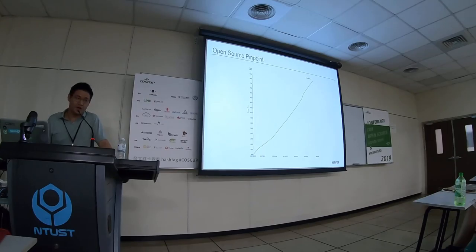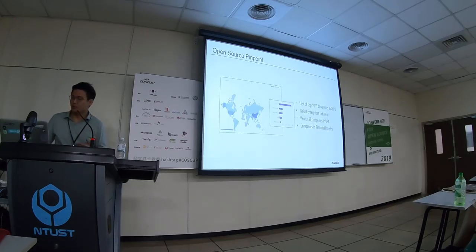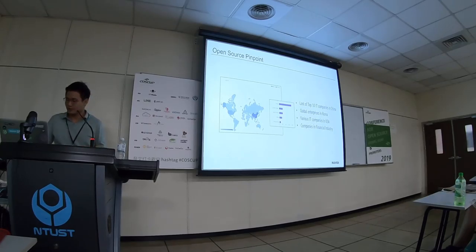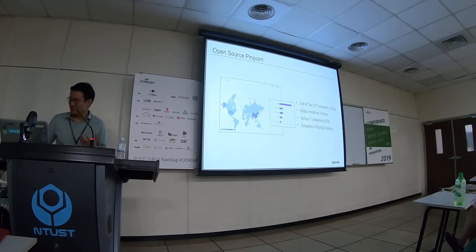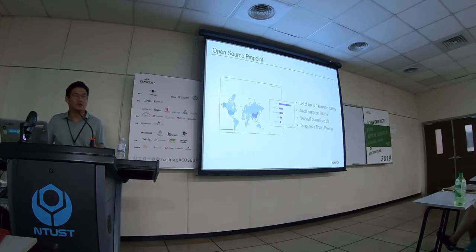This is the graph of GitHub stars — you can see it's continuously increasing and the community is growing really fast. This is a global map showing regions that are using Pinpoint. As you can see, it's used in almost everywhere in the world. Due to legal issues, I can't specify the names of companies using Pinpoint. But many of the biggest IT companies in China, USA, and Korea fully or partly use Pinpoint. Several financial companies in the USA also use Pinpoint as their APM.